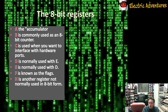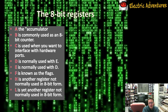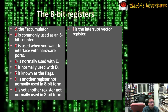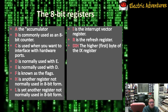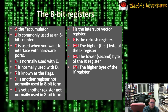H is another register not normally used in 8-bit form, but you can. L is used with H — also not normally used in 8-bit form. I is the interrupt vector register, which we won't be covering in detail in this tutorial. R is the refresh register — same thing. IXH is not normally used singly at all, but there's a special 16-bit register called the IX register, and IXH and IXL are the two parts of that one. And it's the same for IYH and IYL.